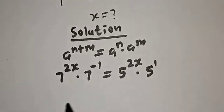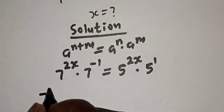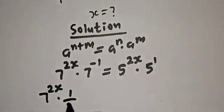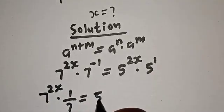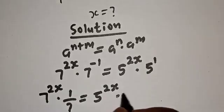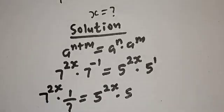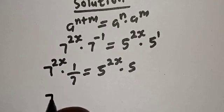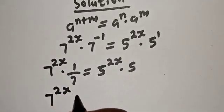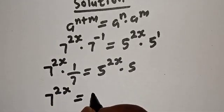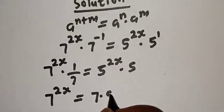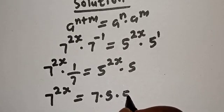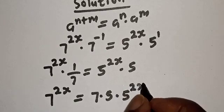And from here, we have 7 raised to power 2s multiplied by 1 over 7 is equal to 5 raised to power 2s multiplied by 5. Then, if you cross multiply, we have 7 raised to power 2s is equal to 7 multiplied by 5 raised to power 2s.